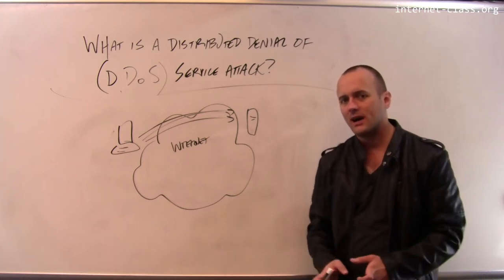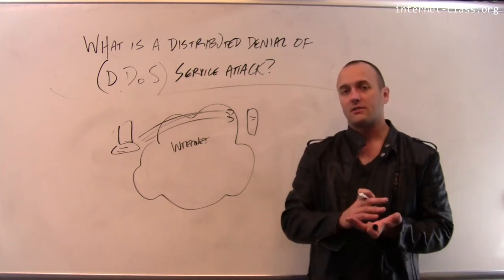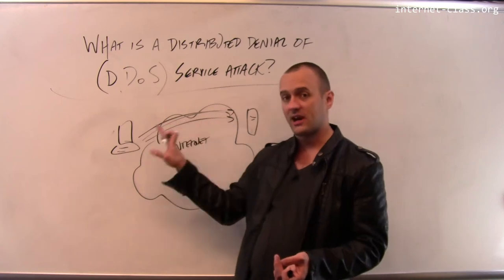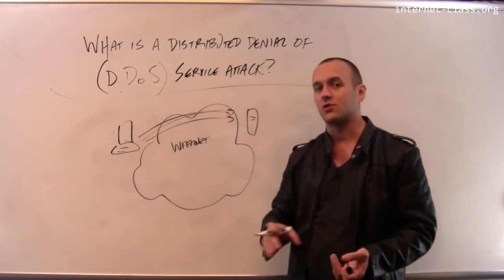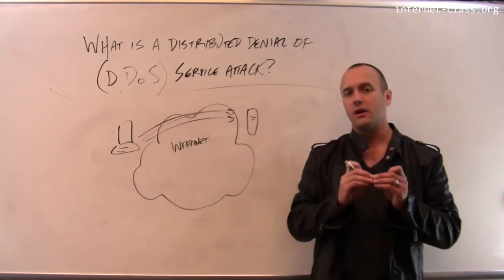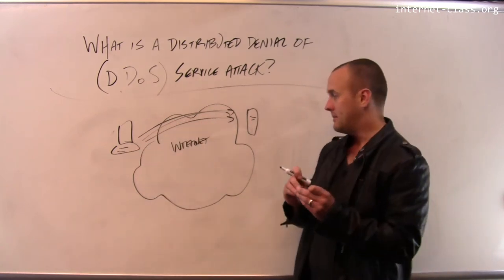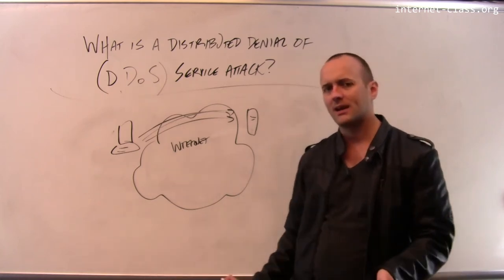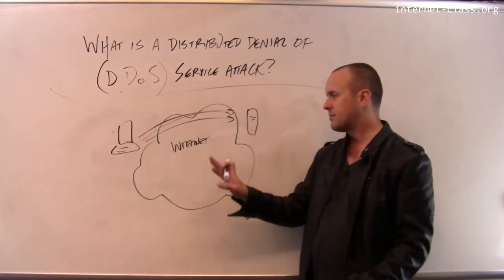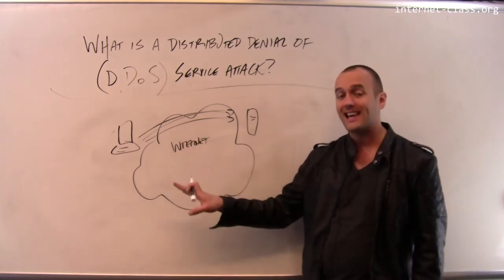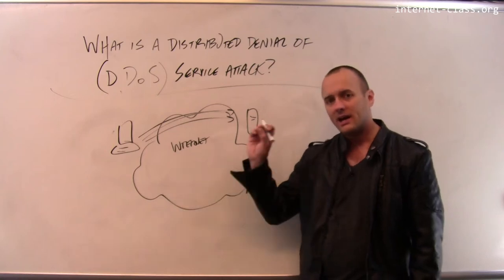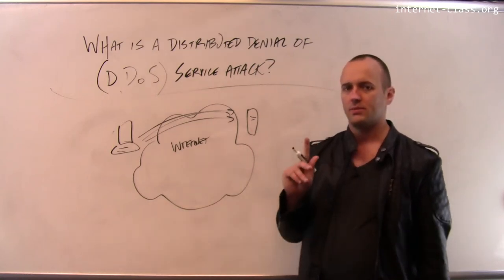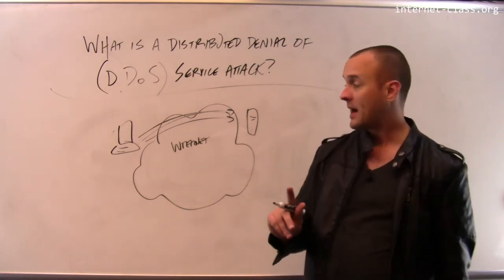The server can tell what's going on and start to rate limit, forcing that client to slow down. It can drop requests from that client or put a rule in the firewall to simply not allow traffic from that client. So there are fairly standard and easy ways to defend against a denial of service attack coming from one particular machine.